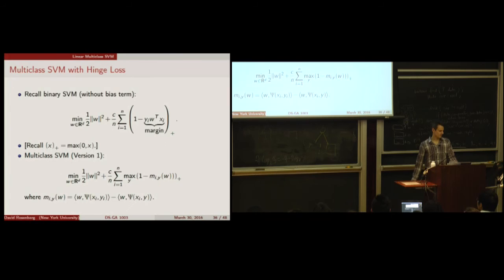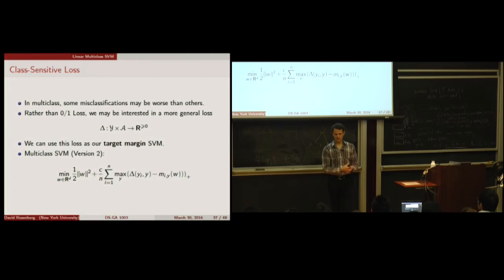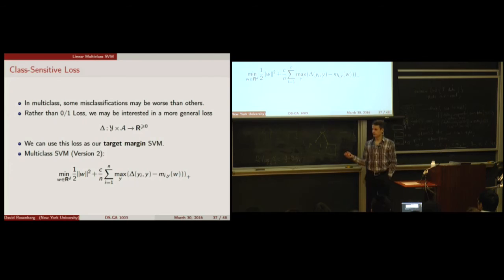Recalling the binary SVM: we have W in R^d, L2 regularization, and an average hinge loss on the margin. For multi-class SVM version one, the structure looks similar: we have a margin for every alternative Y, and we take the worst-case hinge loss over all alternatives Y. That defines our average loss, regularized — this is multi-class SVM version one. Another consideration: in multi-class, certain errors may be worse than others, unlike binary where 0-1 loss is the obvious metric.